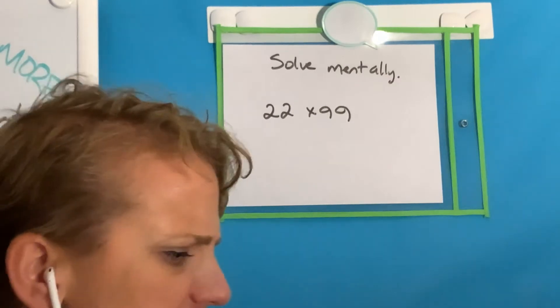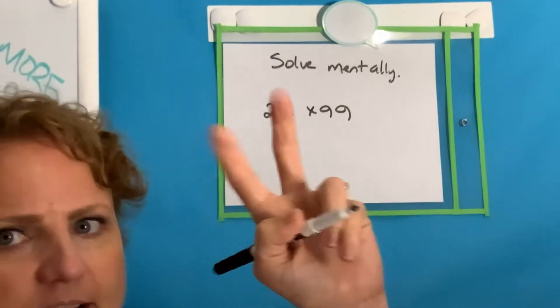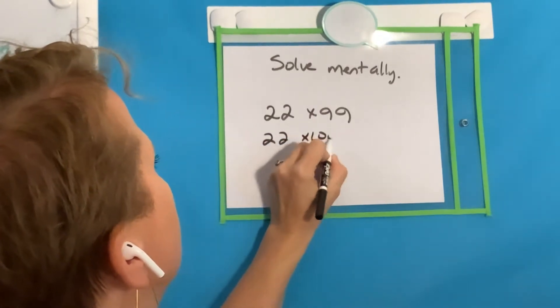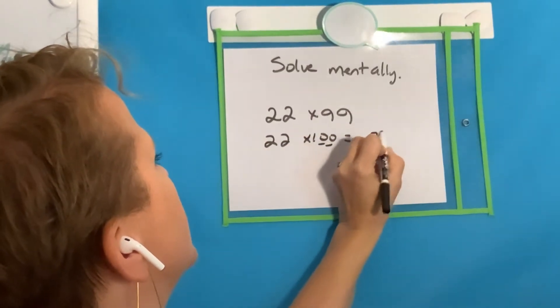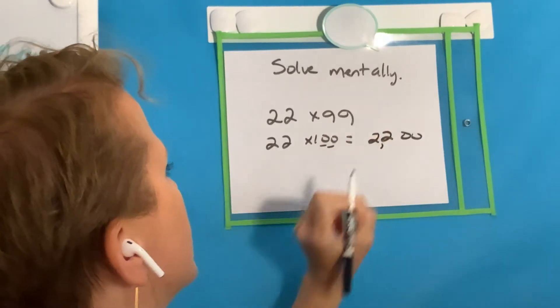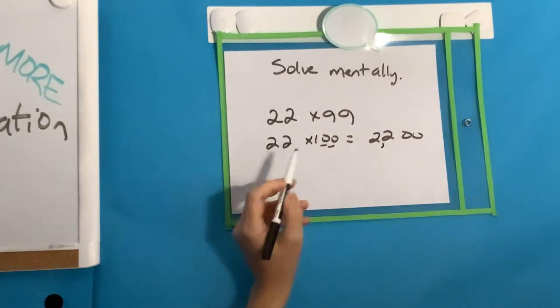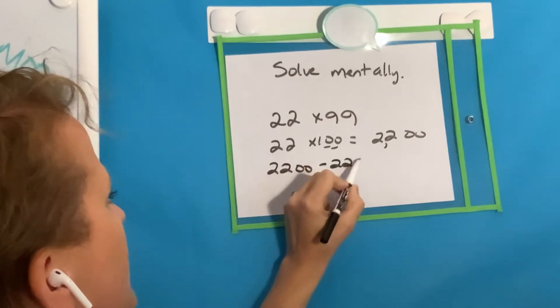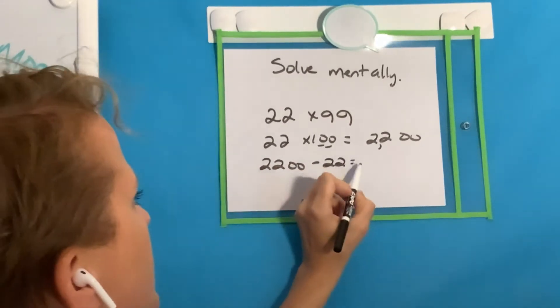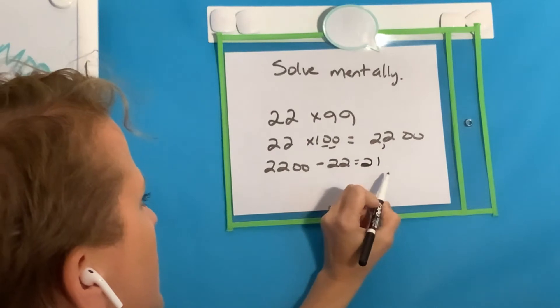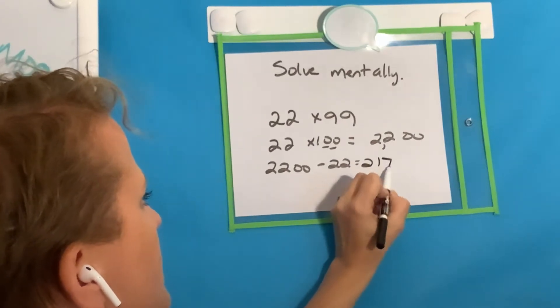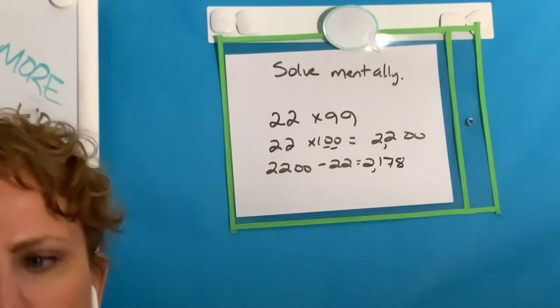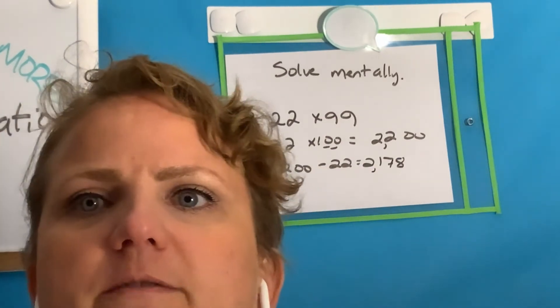And so fifth graders, we're using 99 is close to 100. So we should have done 22 times 100. Remember, we're just adding two zeros, so 2,200. But this is 22 too many. So we need to subtract 22 to find our answer. And we should have gotten 2,178. How'd we do? Hopefully, that worked for you.